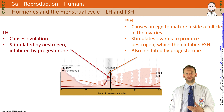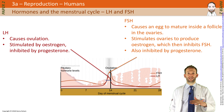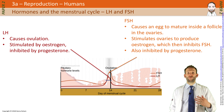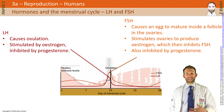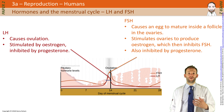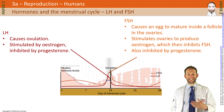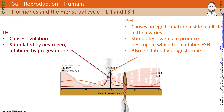FSH is also inhibited by progesterone. When progesterone is high in the second half of the cycle, you don't want an egg to be released at that point, so progesterone inhibits the production of FSH. FSH causes an egg to mature inside a follicle in the ovaries, getting an egg ready to be released.